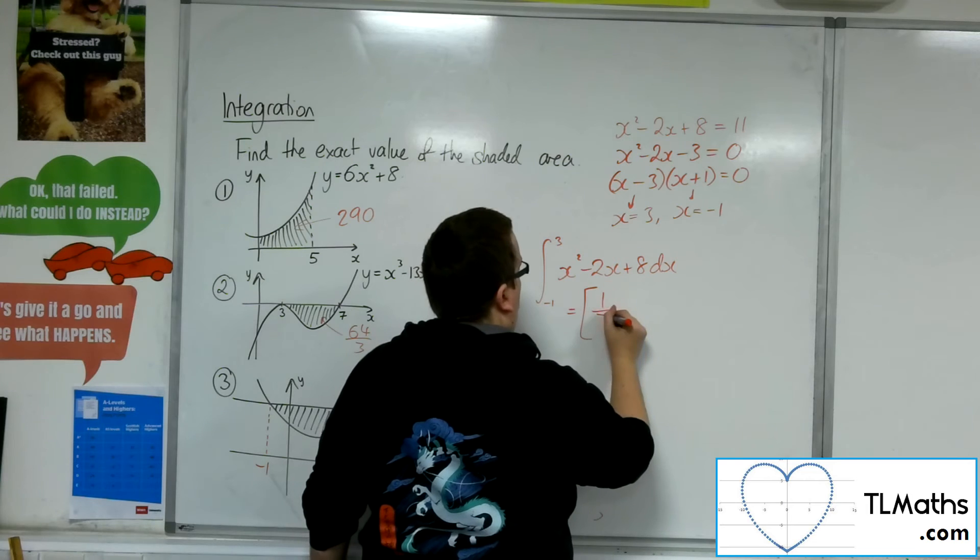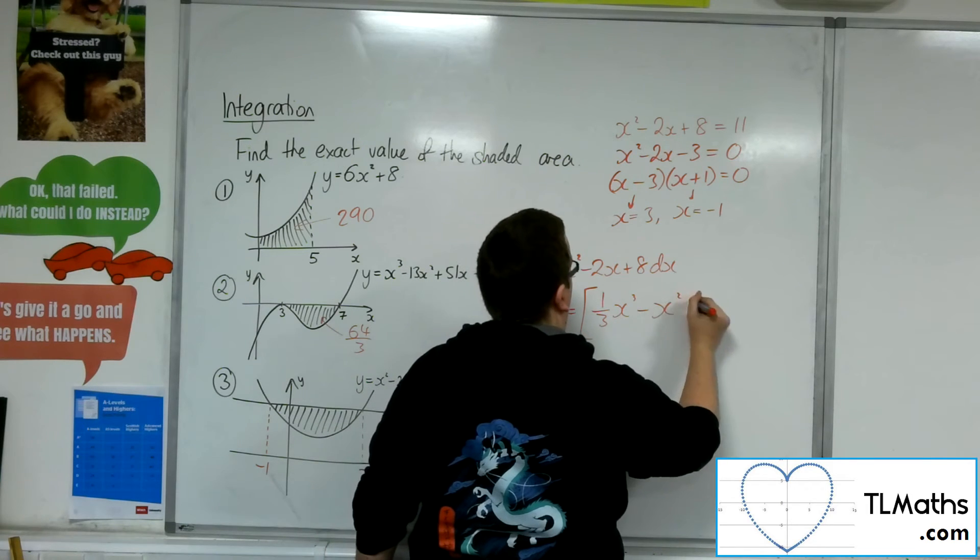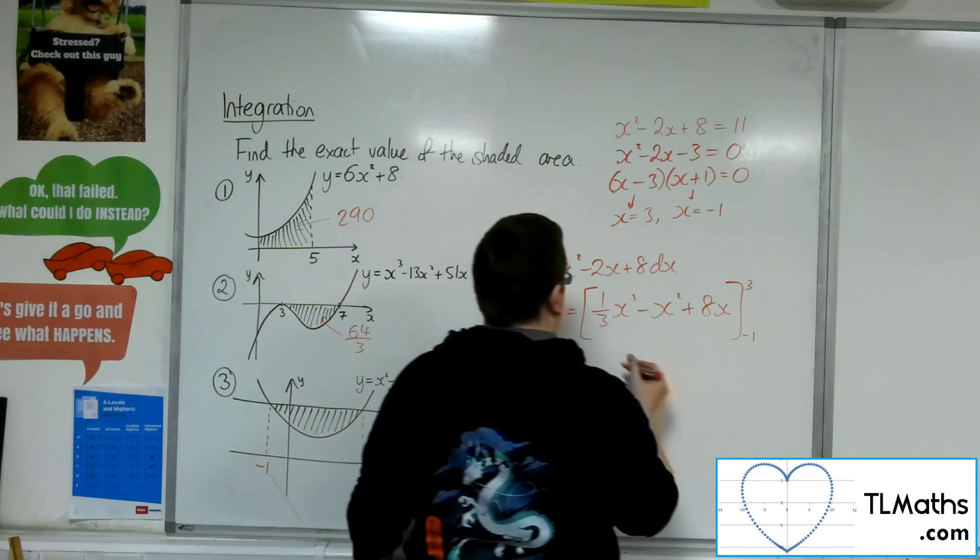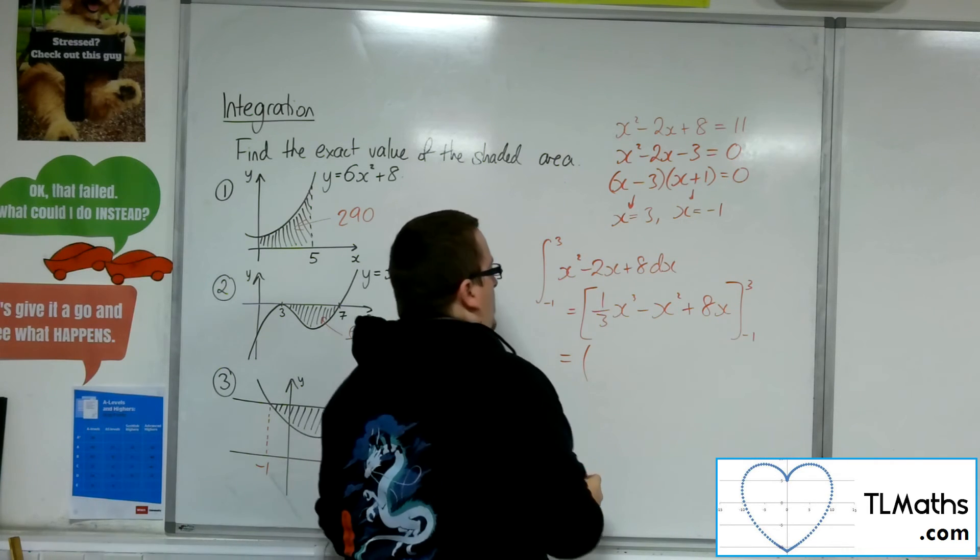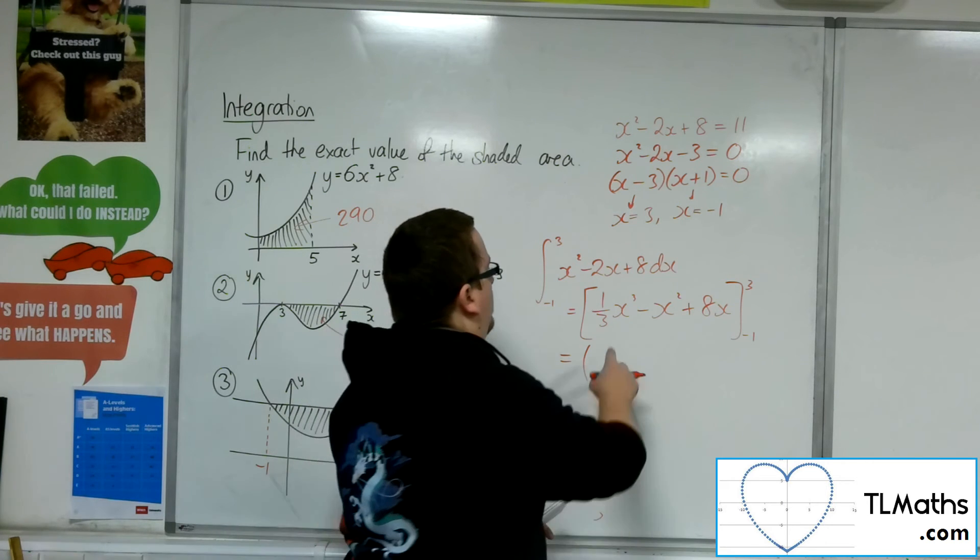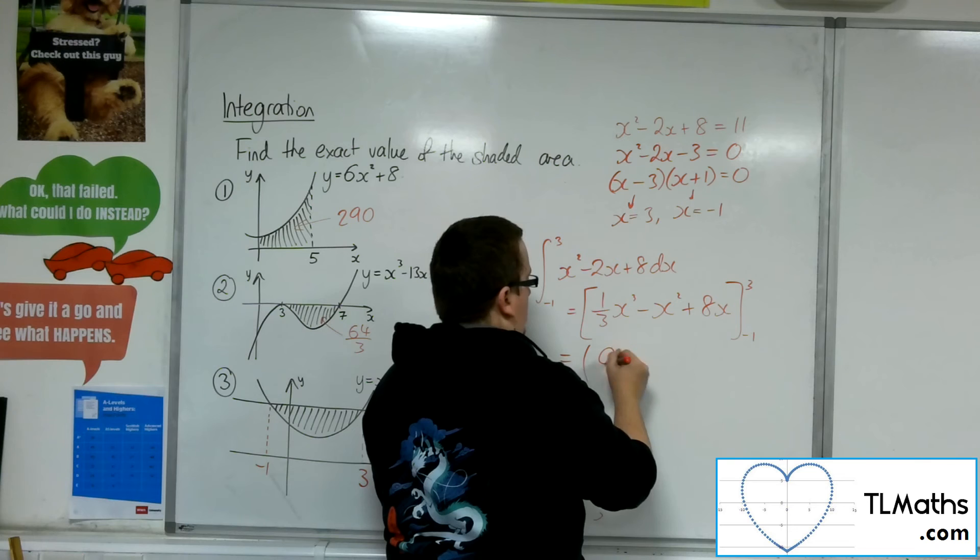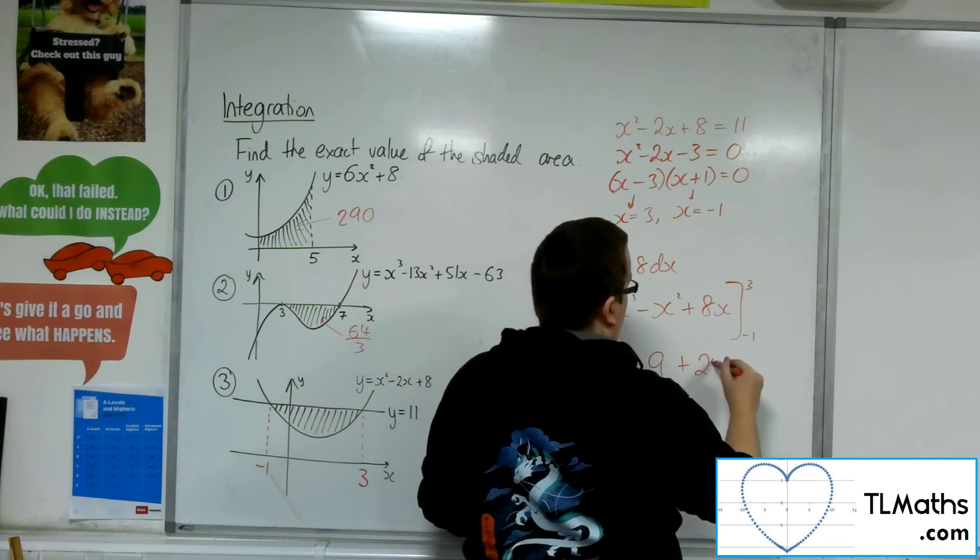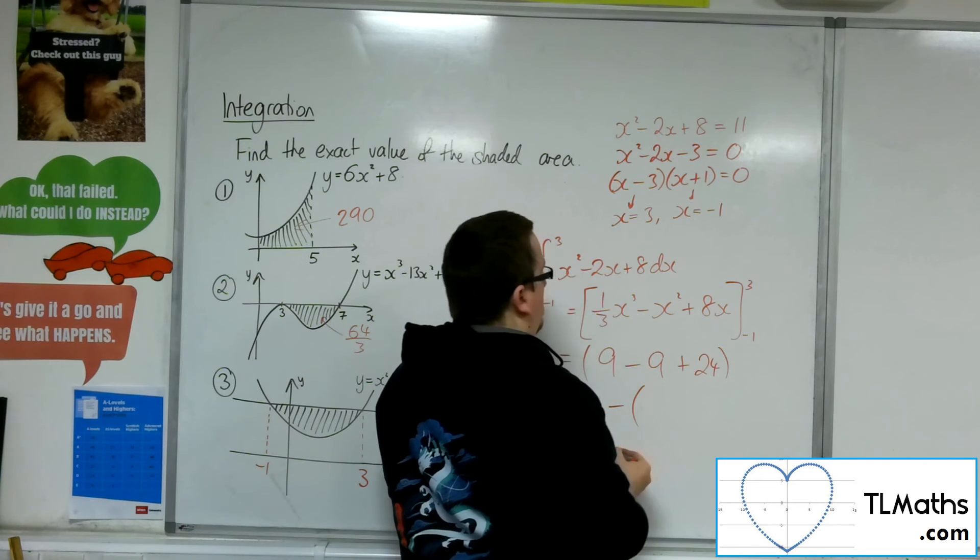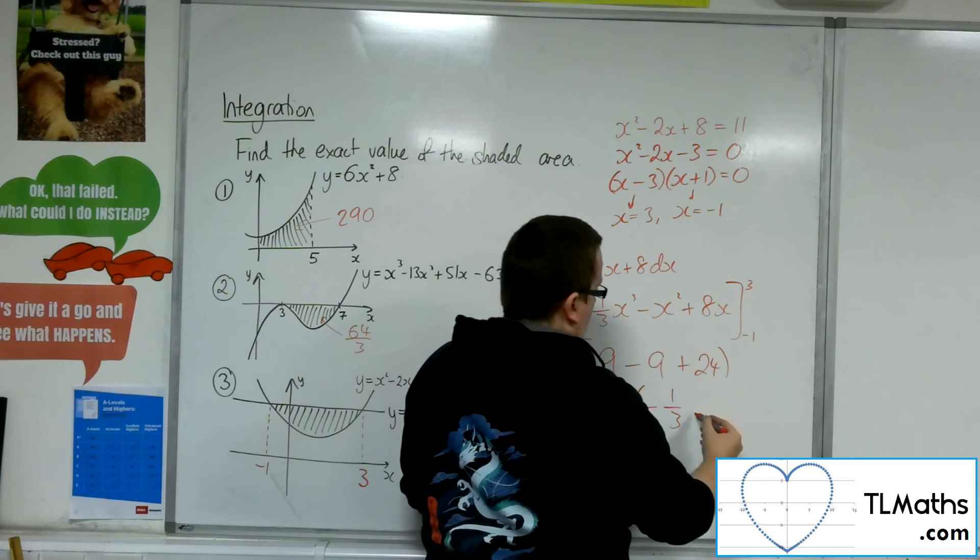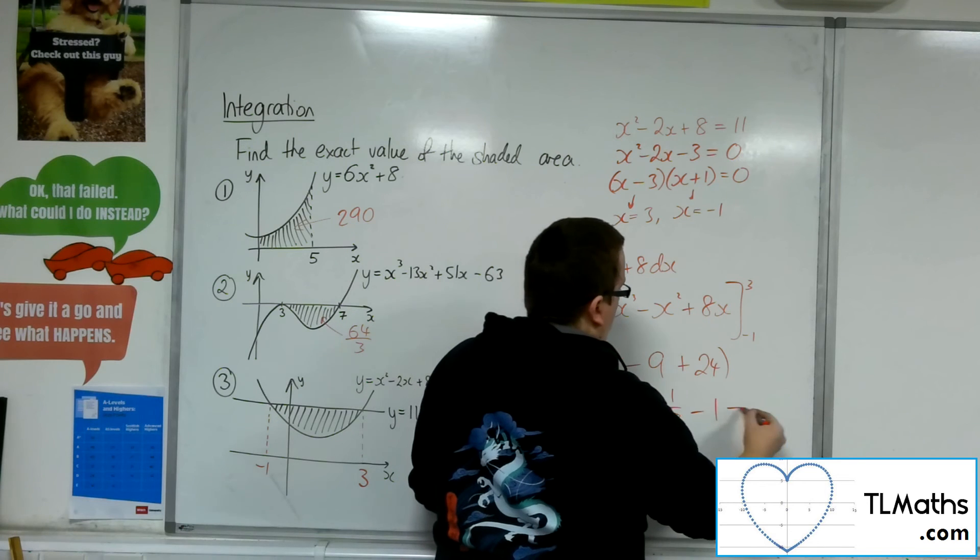Add 1 to the power divided by the new power. Substituting in the 3. So, 1 third of 27 is 9. Take away 3 squared. Then, 8 lots of 3 is 24. Substituting the minus 1, we're going to get minus 1 third. We're going to get take away 1, and then we're going to take away 8.